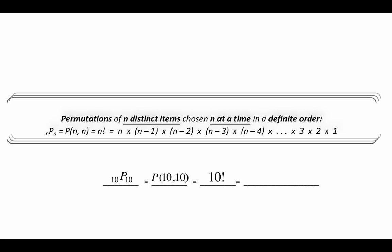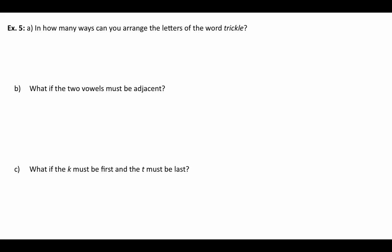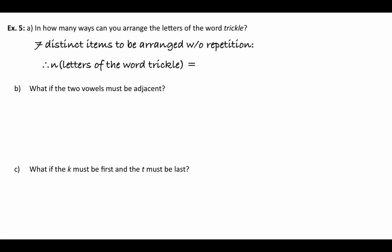Your calculator has an NPR button — we'll show you how to use that. If n equals r, you can just use the factorial button. As soon as we want to choose a different number of items, we'll use different buttons. Let's use an example: how many ways can you arrange the letters of the word 'trickle'? Trickle has all unique letters — nothing is repeated — so it has seven distinct items.